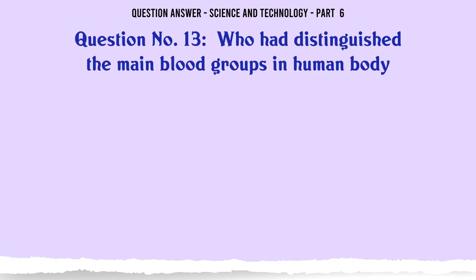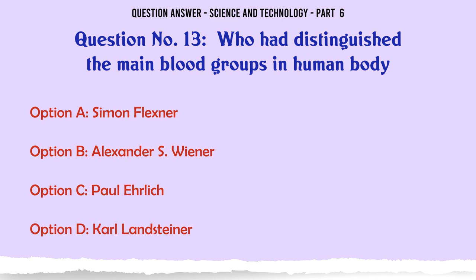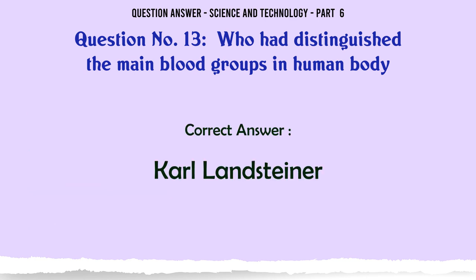Who had distinguished the main blood groups in human body? A. Simon Flexner. B. Alexander S. Wiener. C. Paul A. Hillich. D. Karl Landsteiner. The correct answer is Karl Landsteiner.